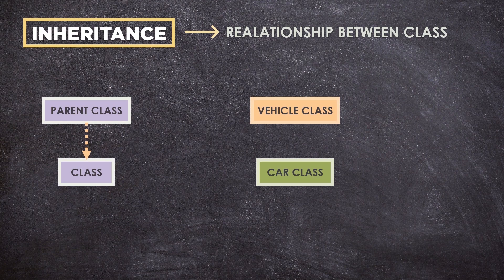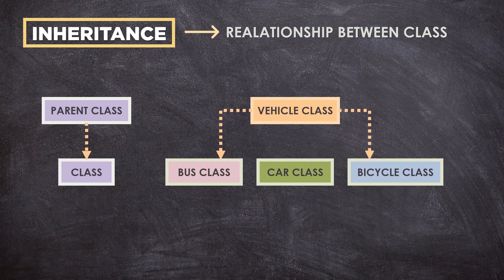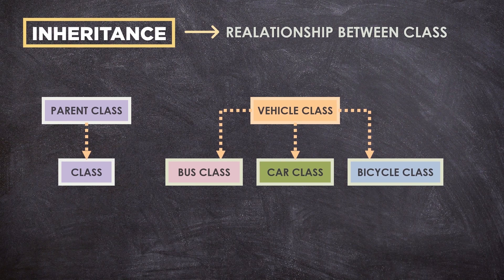Vehicle class will have all common properties and functionalities for all vehicles in common, and car will inherit those common properties from the vehicle class and then add those properties which are specific to a car.